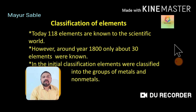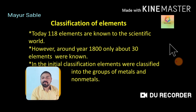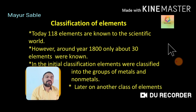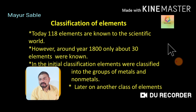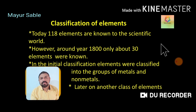In the initial classification of elements, all the elements were classified into the groups of metals and non-metals. More and more information about the properties of elements was gathered during this period. Later on, a group of elements showing similarity between metals and non-metals, called metalloids, got established. When we see the elements and their classification, a question arises: what is the reason behind, and what is the need for, the classification of elements?